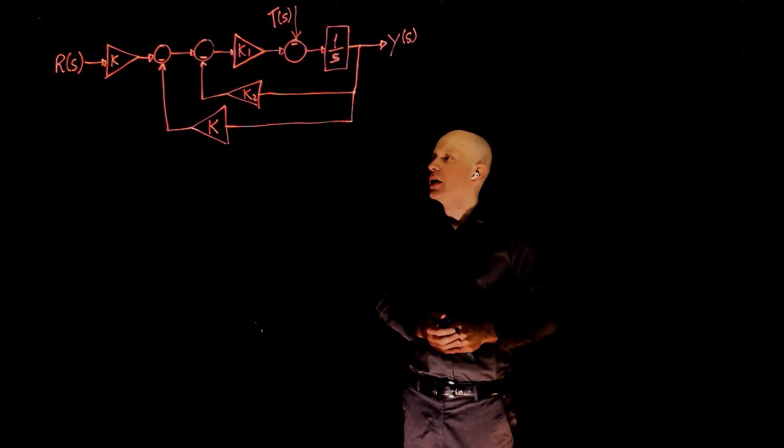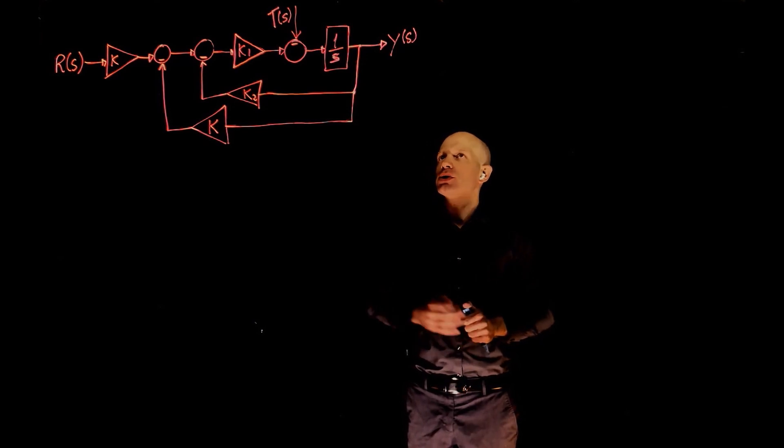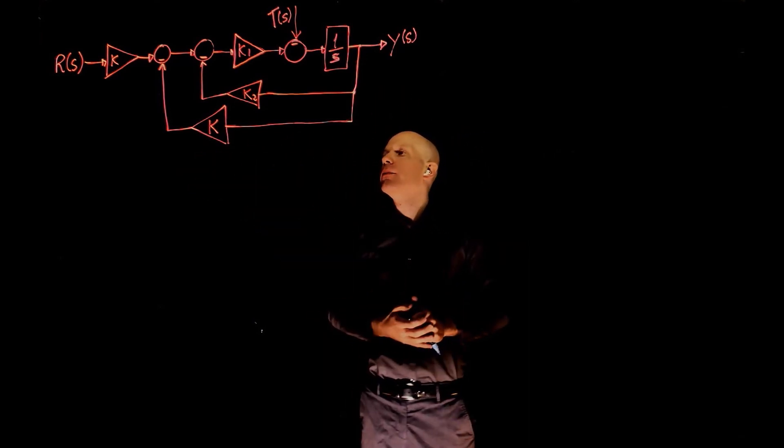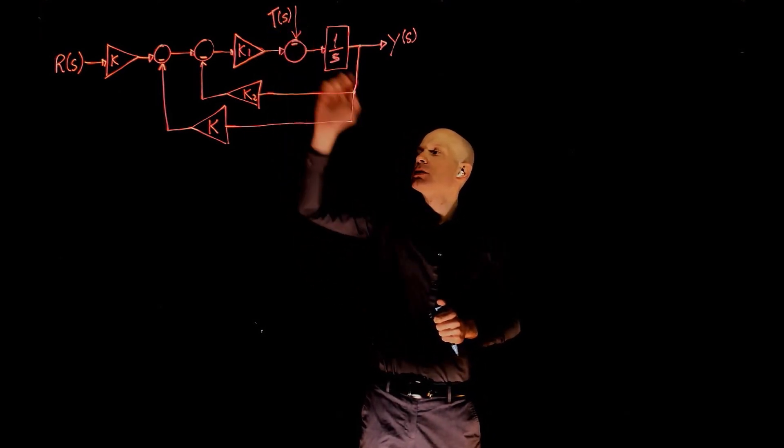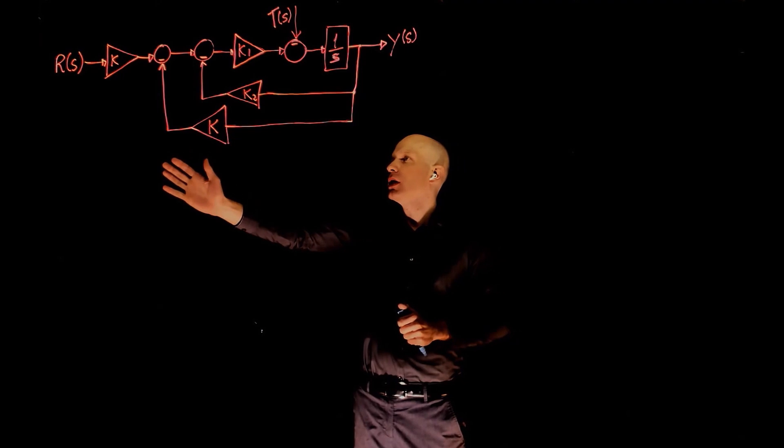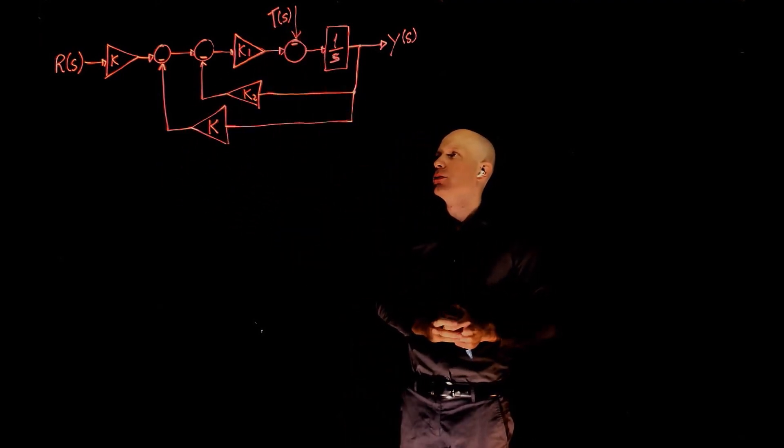This block diagram illustrates the depth control of a submarine. The first question we are trying to answer is to find the transfer function between y and r. We see there is a disturbance here, but if you are interested in the transfer function between input and output, we can for now set the disturbance to zero.